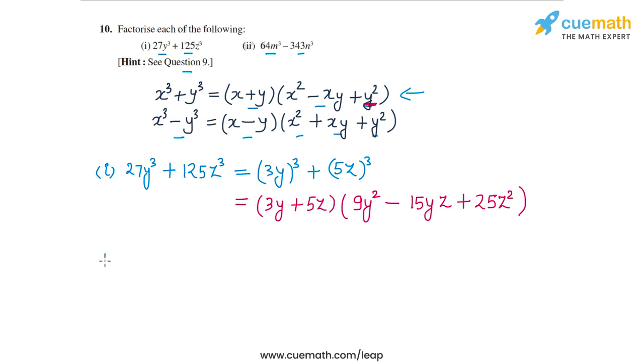Now let's do the second part. We have 64m³ - 343n³. 64m³ is the cube of 4m, so (4m)³, minus 343n³, which is the cube of 7n, so (7n)³.